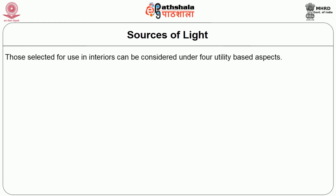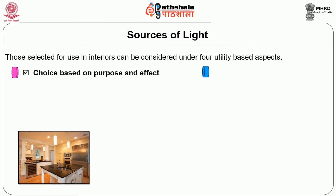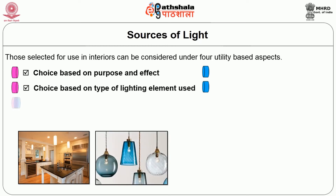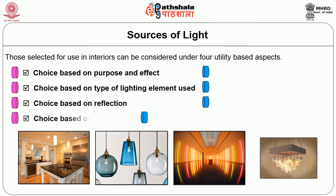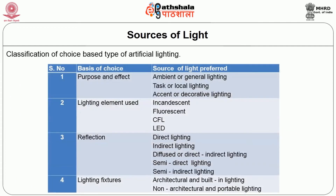Artificial lights chosen for use in interiors can be considered under four utility-based concepts. Choice based on purpose and effect offers three types: ambient or general lighting, task or local lighting, and accent or decorative lighting. Choice based on type of lighting element used offers four types: incandescence, fluorescent tubes, CFL and LED. If reflection is the major factor, there are five types: direct, indirect, diffused, semi-direct or semi-indirect lighting. And if the concern is the lighting fixture, it is either architectural or built-in lighting, or non-architectural portable lighting.